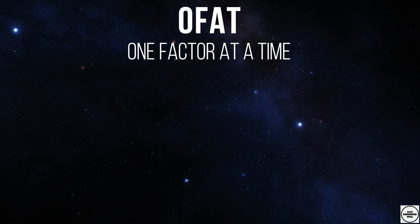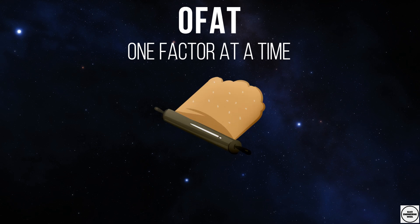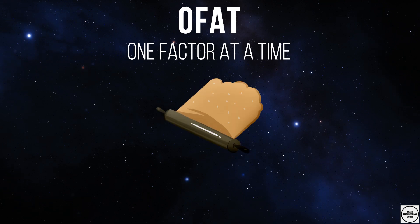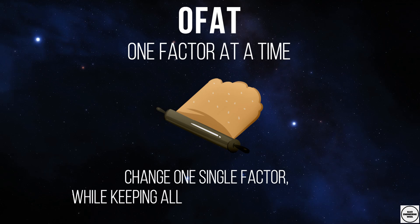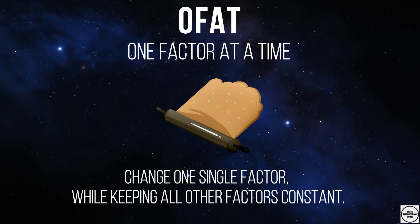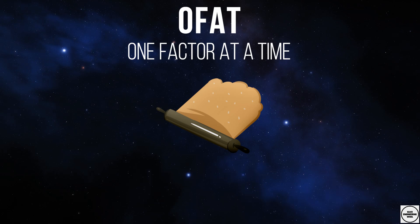Let's go back to the pizza dough example. By using one factor at a time we change one single factor while keeping all other factors constant. This factor is changed until the target value is closest to the optimum. Let's apply this definition on the pizza example.